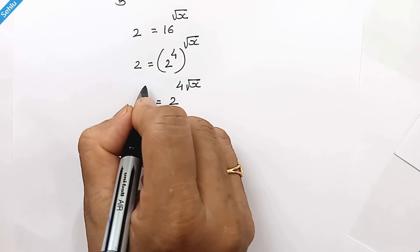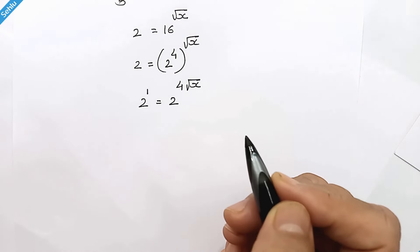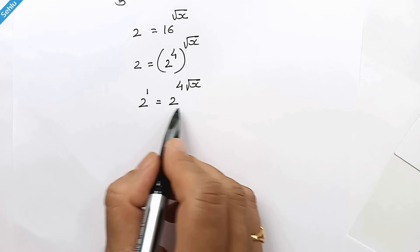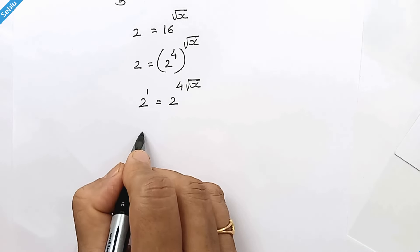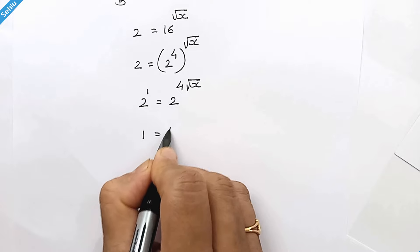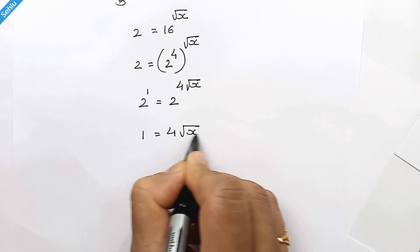Now here 1 is always there as an exponent, and we have same base both the sides, so we can equate that exponent: 1 is equal to 4 times square root of x.